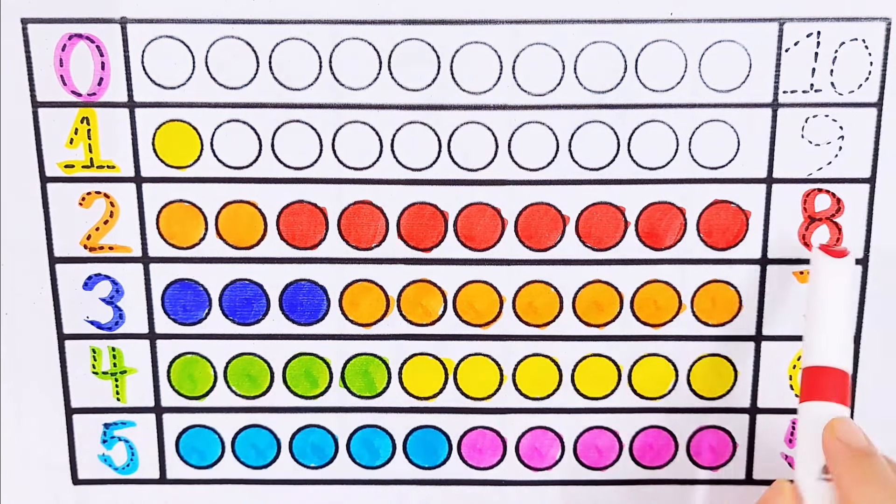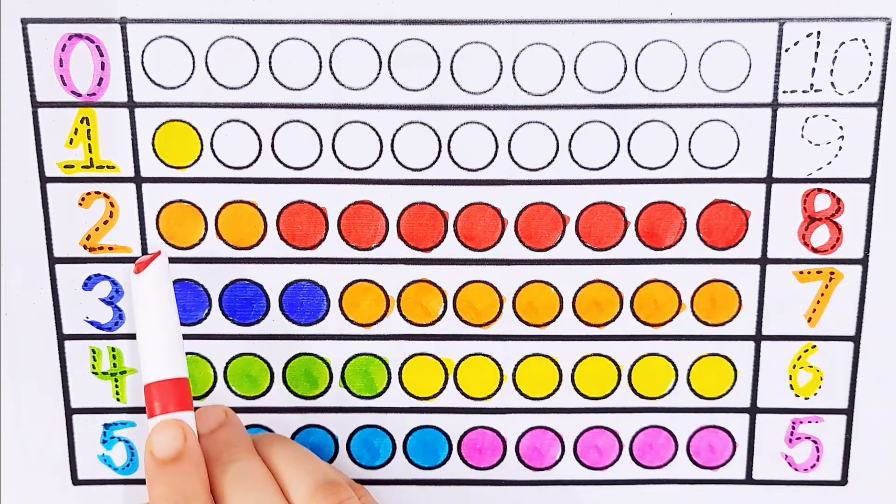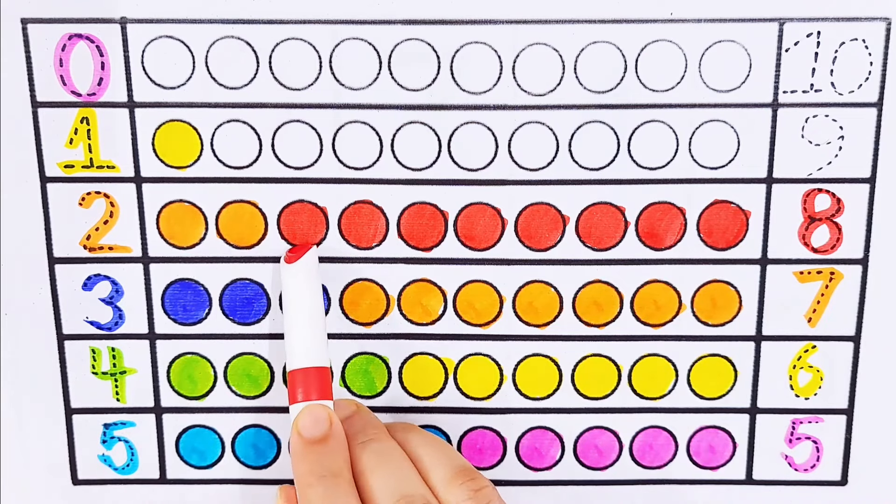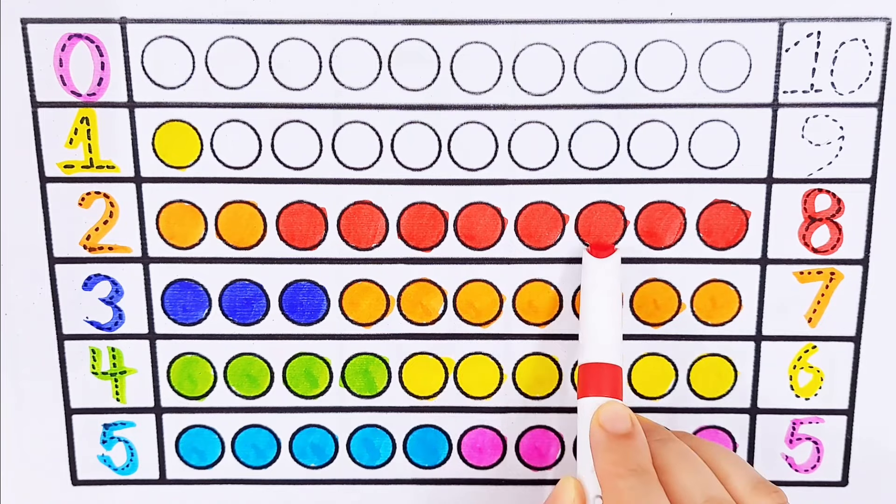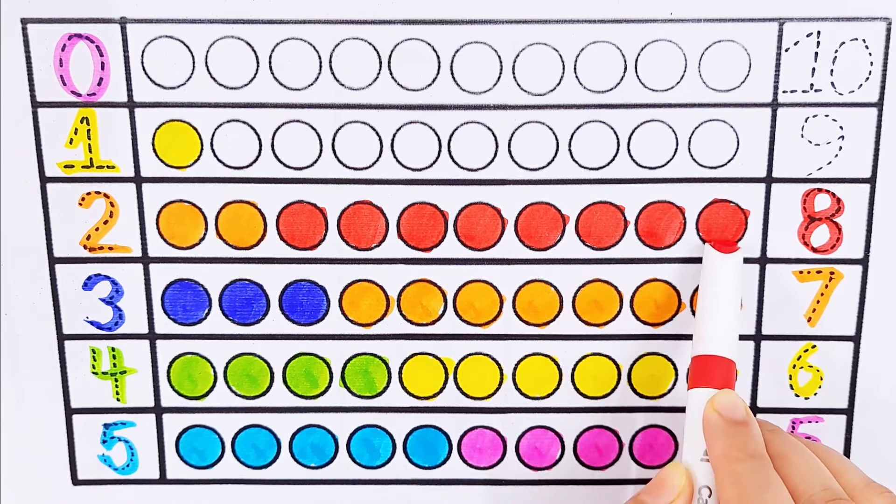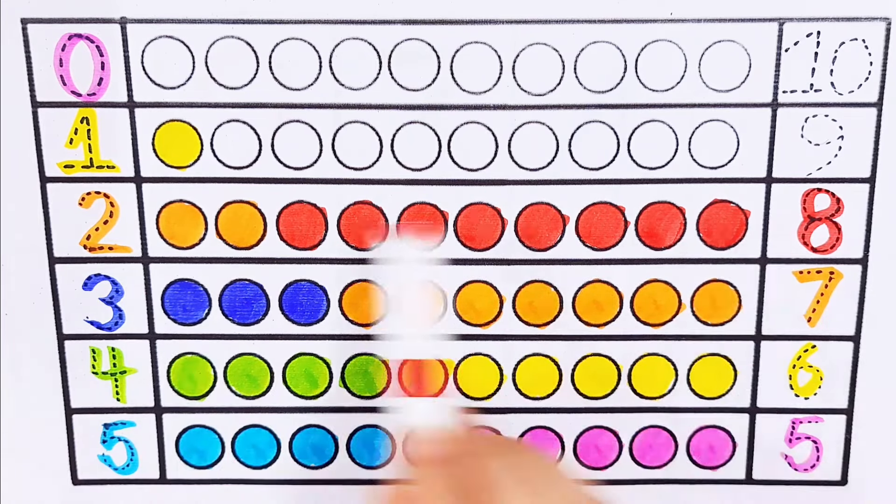2 plus 8 equals 10. 1, 2, 3, 4, 5, 6, 7, 8, 9, 10. 2 plus 8 equals 10.